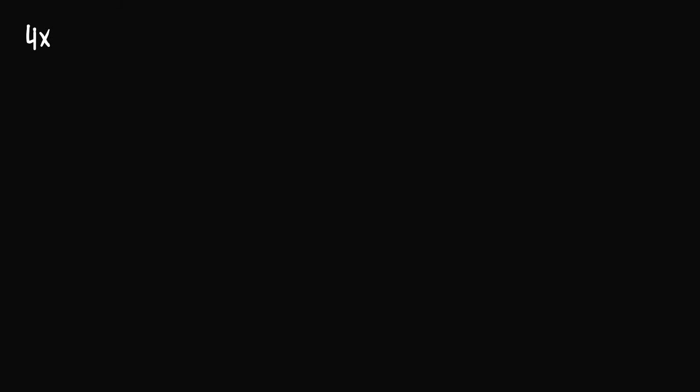I'm going to give a few examples of linear equations and some examples of nonlinear equations, and we can try to understand what makes each equation nonlinear. In the first example, we have the equation 4x minus e to the second power times y is equal to cosine of 3π divided by 2. Although there is a cosine function and Euler's constant e within this equation, the unknown variables x and y are not part of any trigonometric, exponential, or logarithmic function, they're not multiplied with one another, and they're only raised to the first power. So this equation is linear.